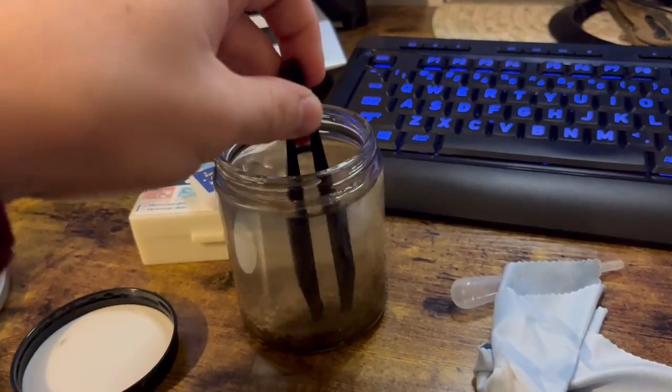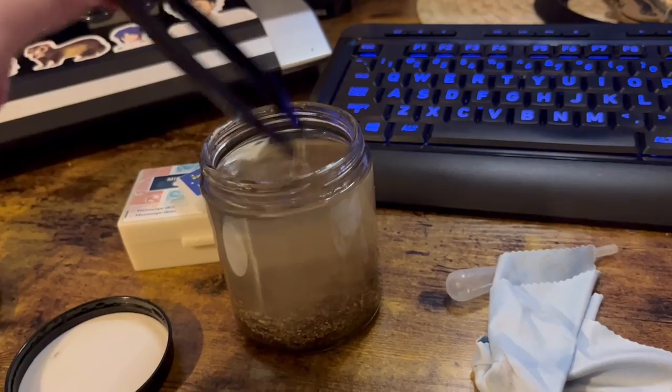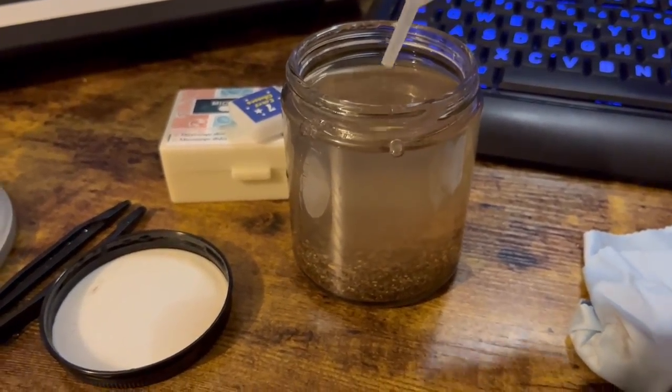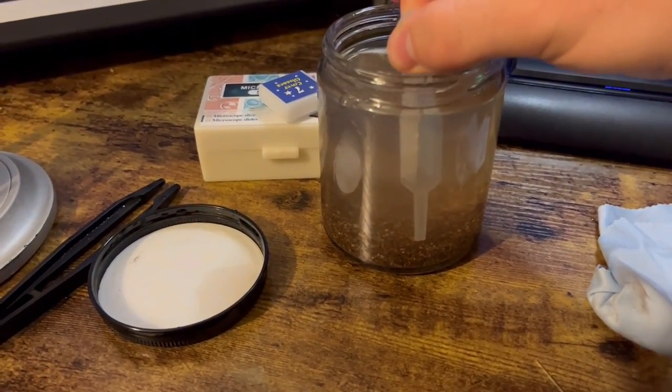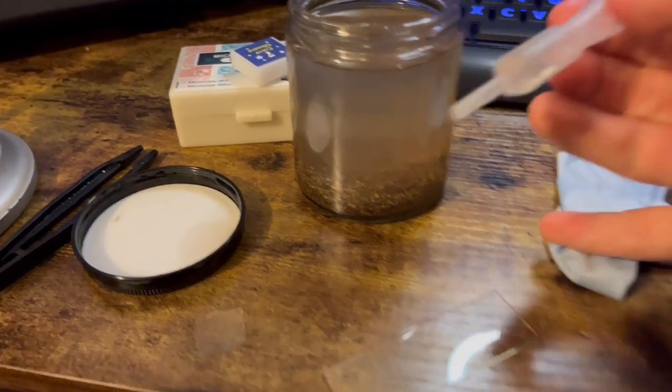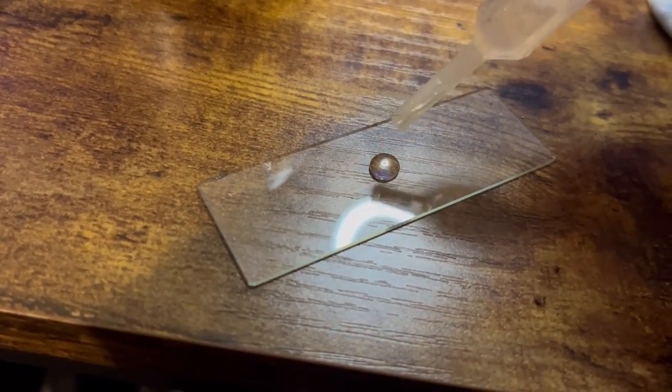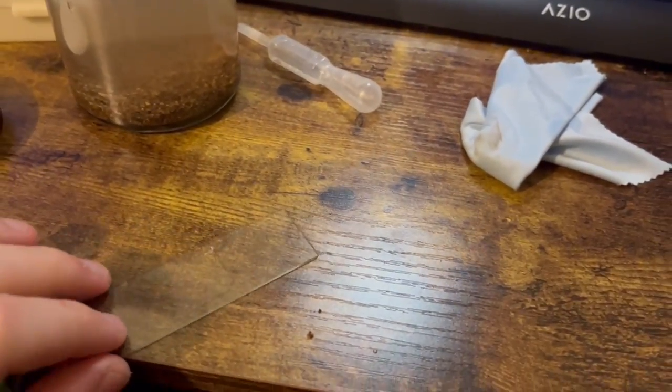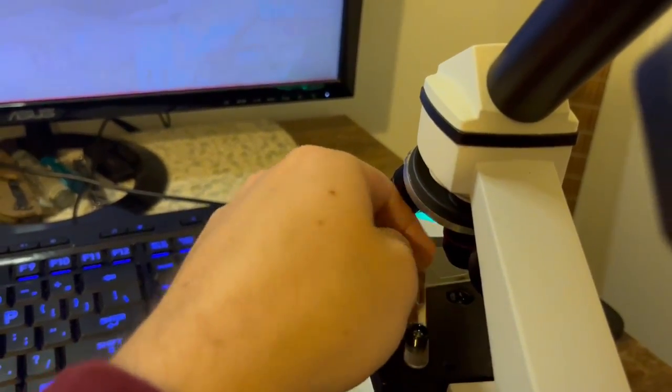Luckily the microscope has this handy phone holder so we should be able to record some pretty good video. So we're just gonna stir up the water here to get everything that's settled moving again. Then I'm going to take my pipette, fill it up with water from near the bottom, near the rocky area. Put that drop of water right there, take the cover, drop it on there. Now we can go ahead and take this slide, put it under the microscope and move to the microscope view.